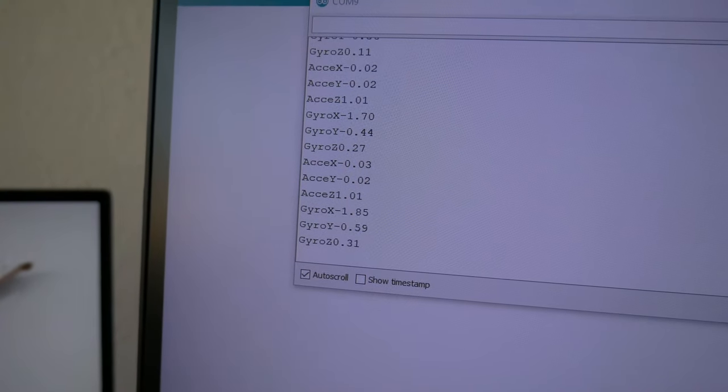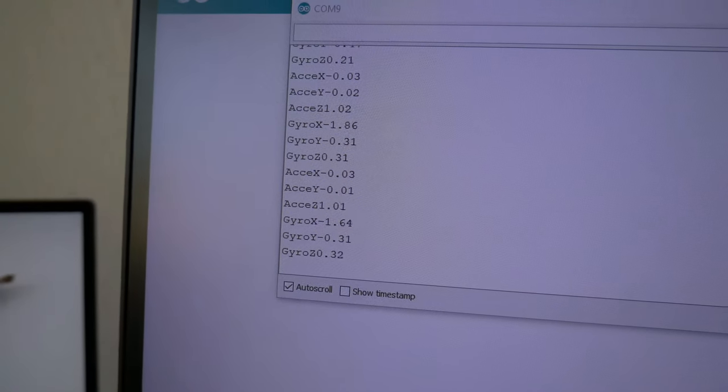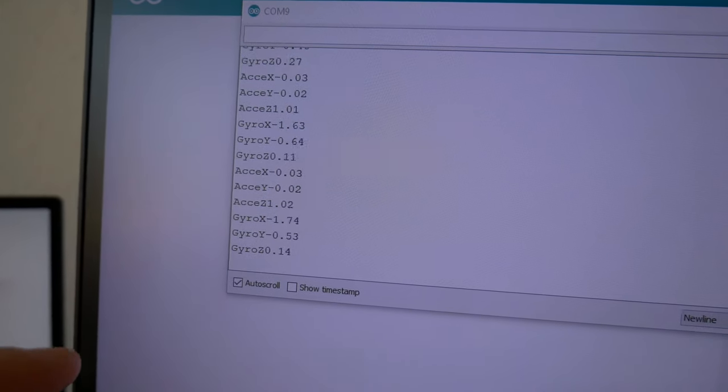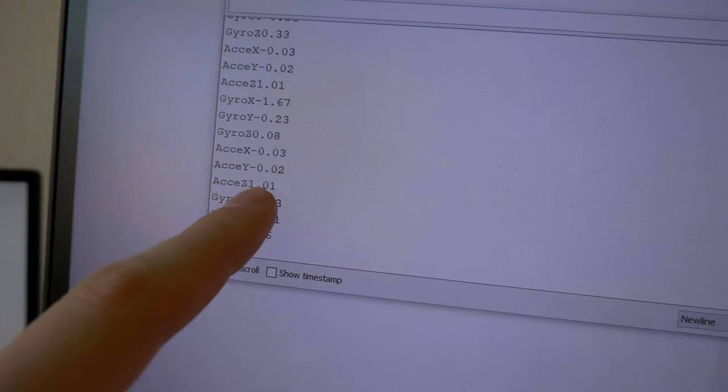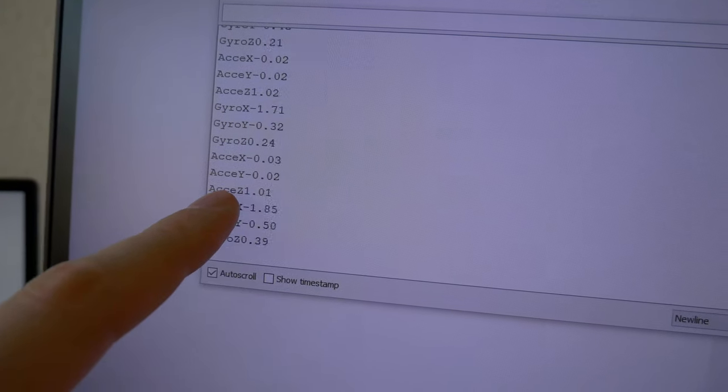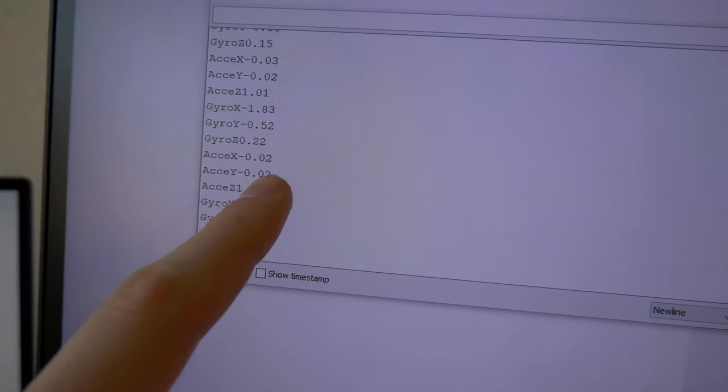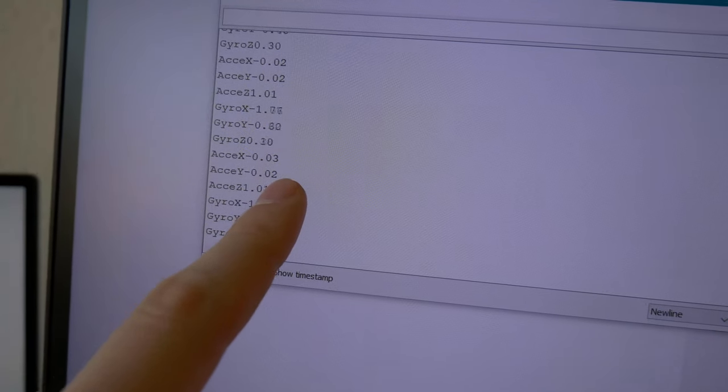Using the LSB sensitivity I have now converted the raw values to actual values that make sense. You can see about 1G in the Z axis and then we have a little bit of drift on the X and Y axis and quite a bit of drift on the gyroscope.